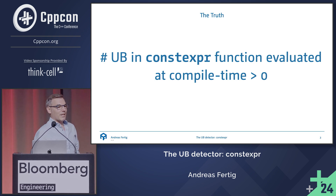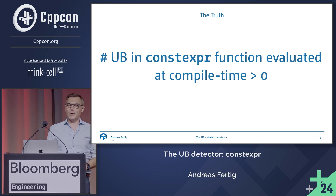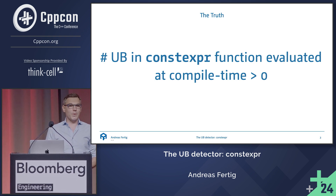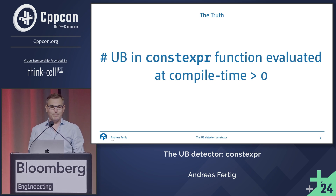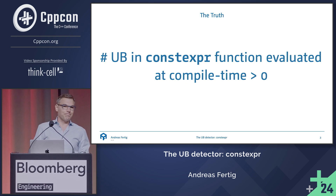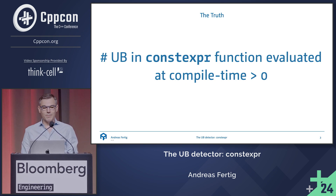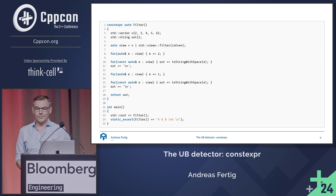The correct answer is you can have more than zero UB in a constexpr function evaluated at compile time. I don't see an angry mob here — wonderful. So look at this piece of code.